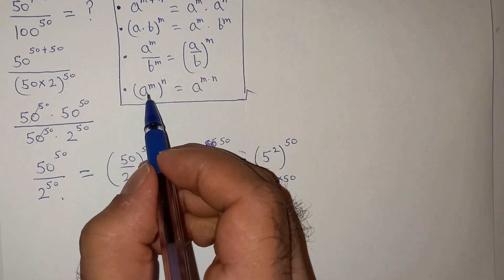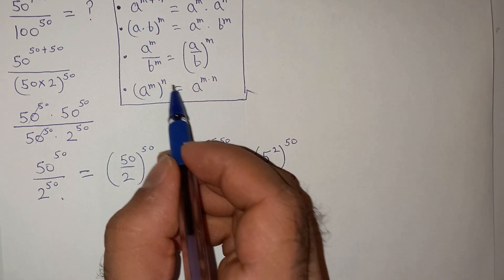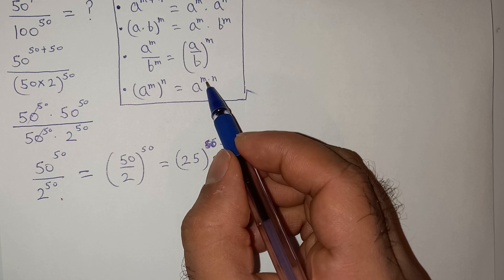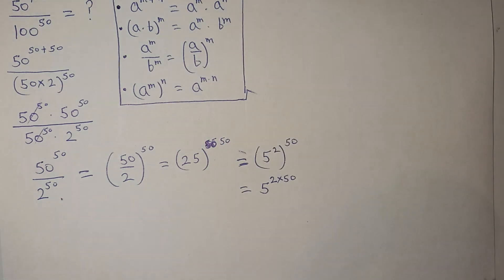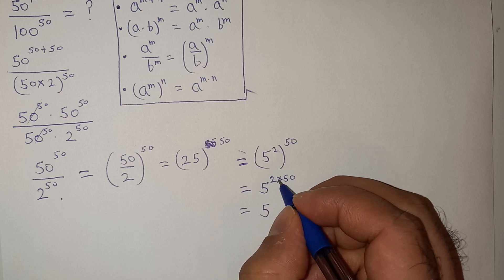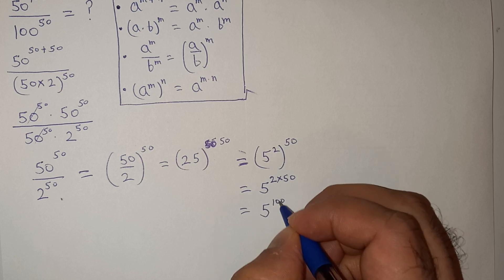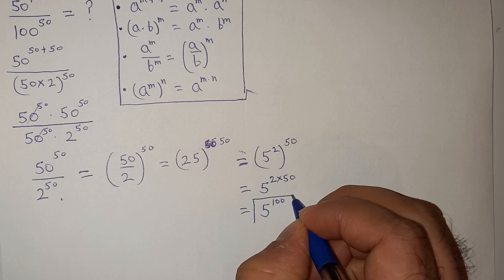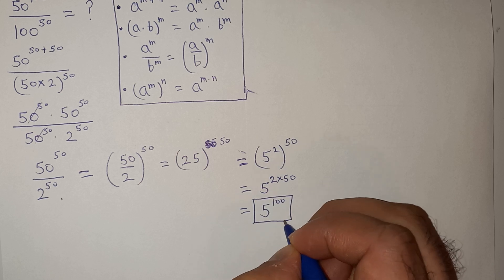As per this rule a power m bracket power n equals a power m multiplied by n, we will have 5 to the power of 2 multiplied by 50 is 100. So this is the final answer to this question.